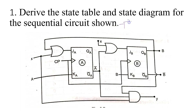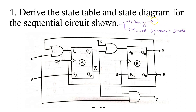We know that there are two types of models: Mealy model and Moore model. In the Moore model, the output depends only on the present state. Whereas in the Mealy model, the output depends on the present state as well as the present input.